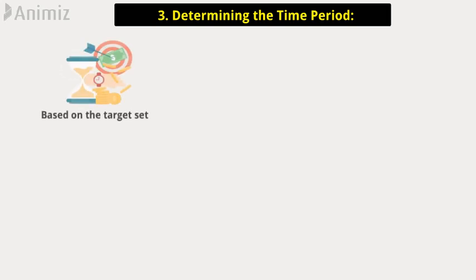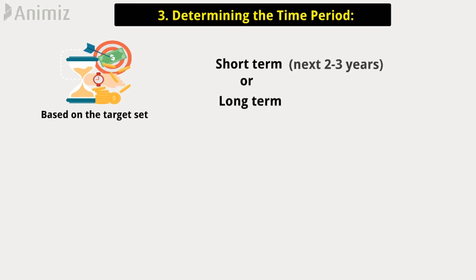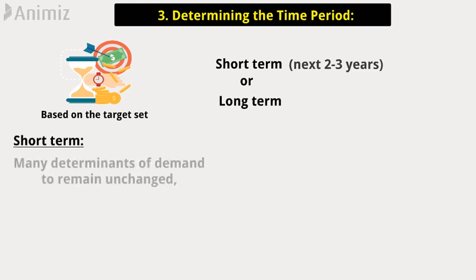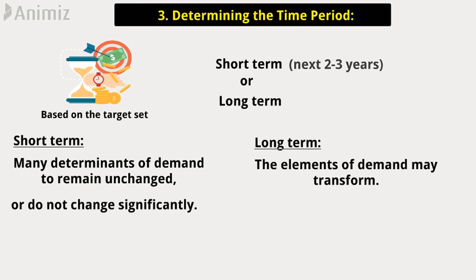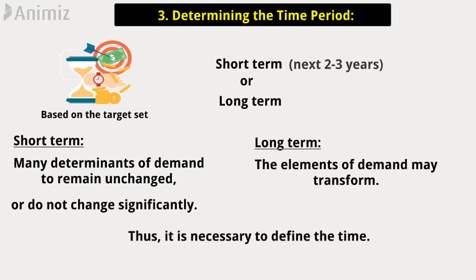Step 3: Determining the time period. Based on the target set, the demand forecast can either be for the short term, say for the next two to three years, or long term. While forecasting demand for the short term, we can assume many determinants of demand to remain unchanged or do not change significantly. But in the long term, the elements of demand may transform. Thus, it is necessary to define the time.